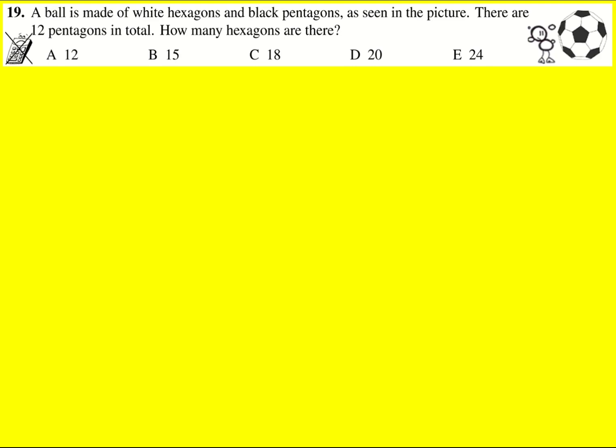A ball is made of white hexagons and black pentagons, as seen, and there are 12 pentagons in total. How many hexagons are there?